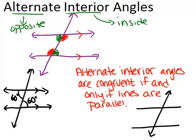The other way around: if I have two lines and I don't know whether they are parallel, but I have two alternate interior angles marked as congruent — for example, they're both 100 degrees — that means the lines have to be parallel. Even though it wasn't marked, I know these two lines have to be parallel because the alternate interior angles are congruent.